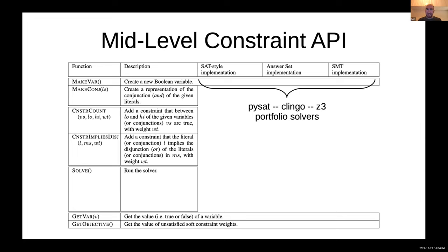All conveniently have Python APIs that can be used. One of the nice things is that it's very easy to plug in a portfolio solver where you don't have to pick one. You can run several of them at the same time and pick the one that finds the answer first. So you get the best of multiple solvers with a little bit of overhead.